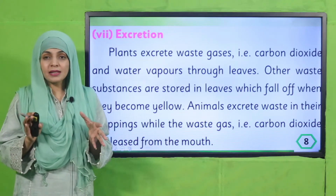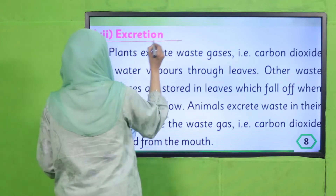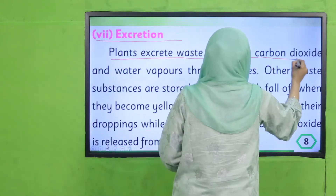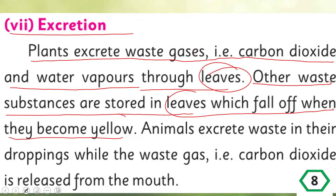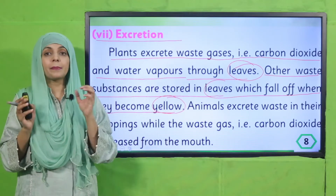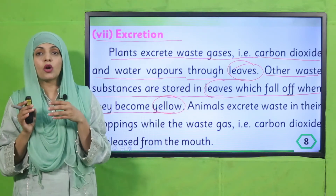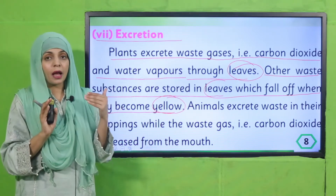Now let's move forward to the next characteristic: excretion. On page number eight: plants excrete waste gases — carbon dioxide and water vapors — through their leaves. Other waste substances are stored in leaves, which fall off when they become yellow. In plants, water and excess nutrients or waste products evaporate through leaves, or are stored in dead leaves and fall off. This is how plants get rid of waste.